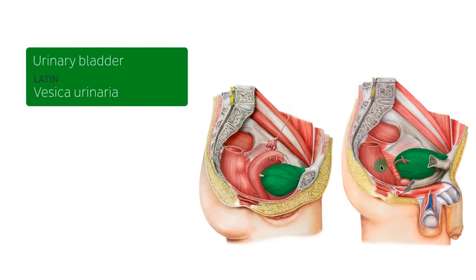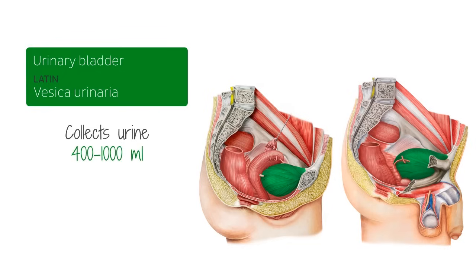The bladder's main function is to collect urine, to be later voided by urination. Although the volume of the bladder varies from person to person, in general it can hold anywhere from 400 to 1000 milliliters of urine, with the average capacity at around 400 to 600 milliliters.